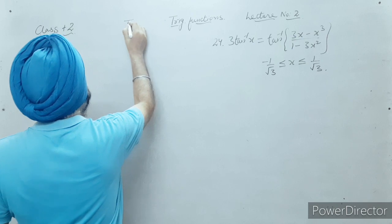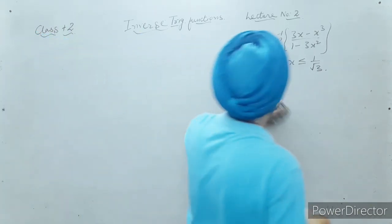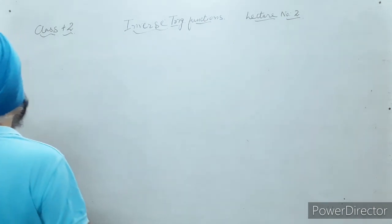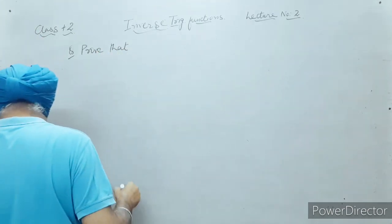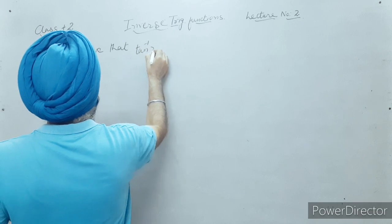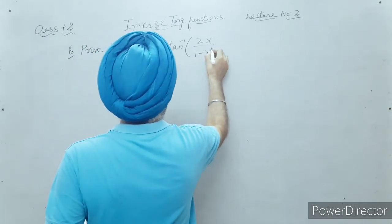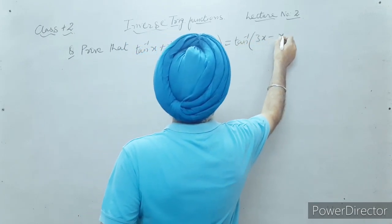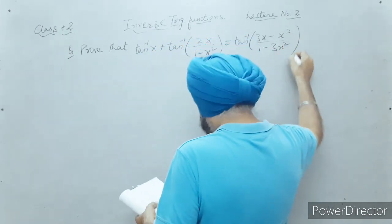These properties are very important and are an integral part of the chapter on inverse trigonometric functions. The first question I would like to solve: prove that tan inverse x plus tan inverse [2x upon (1 minus x²)] is equal to tan inverse [(3x minus x³) upon (1 minus 3x²)].